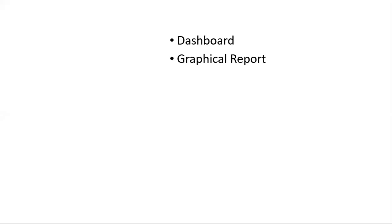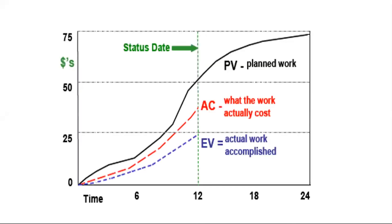In Earned Value Management, you also produce graphical reports called S-curves. On the S-curve, you can see three parameters plotted over the full project timeline. The cut-off date is where you 'cut' the schedule window — that is why it is called a cut-off date. You draw a vertical line at that date, and everything to the left represents your analysis period.